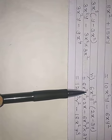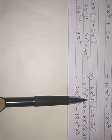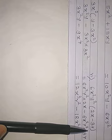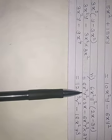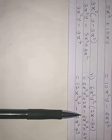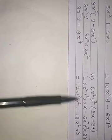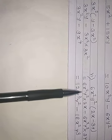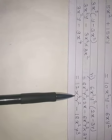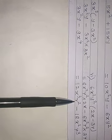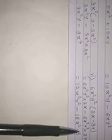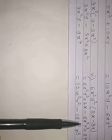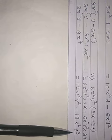Next example: 6x squared y squared into bracket (2x minus 3y), which equals 6x squared y squared into 2x minus 6x squared y squared into 3y. So 6 into 2 is 12, x squared into x is x cubed, y squared as it is — minus 6 threes are 18, x squared as it is, and y squared into y it will be y cubed.